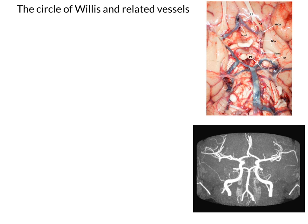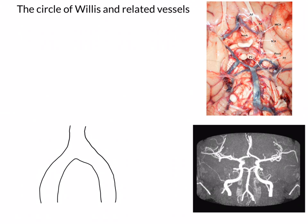Let's start building up the cerebral circulation with the vertebral arteries. There are the two vertebral arteries — vertebral artery — coming together to form the basilar artery. The basilar artery is one of the few midline arteries in the body, running there in the midline.